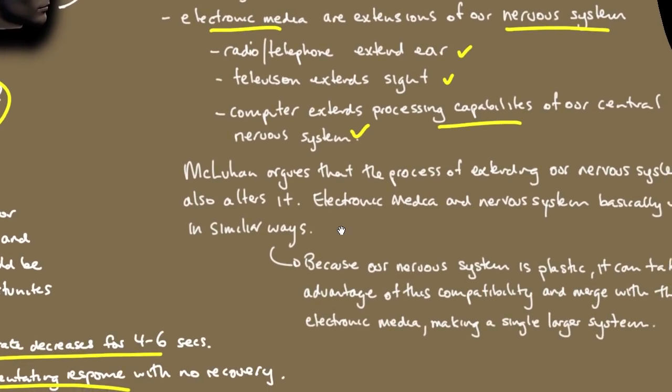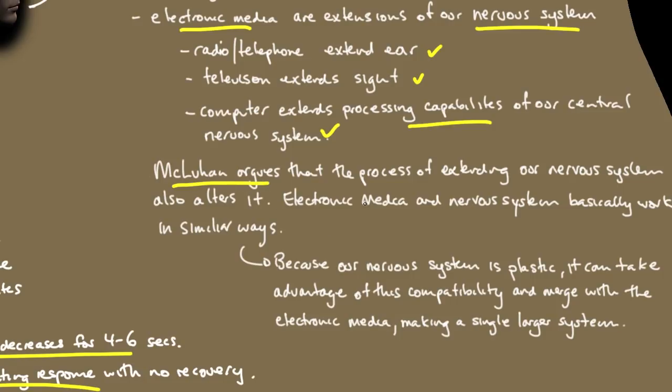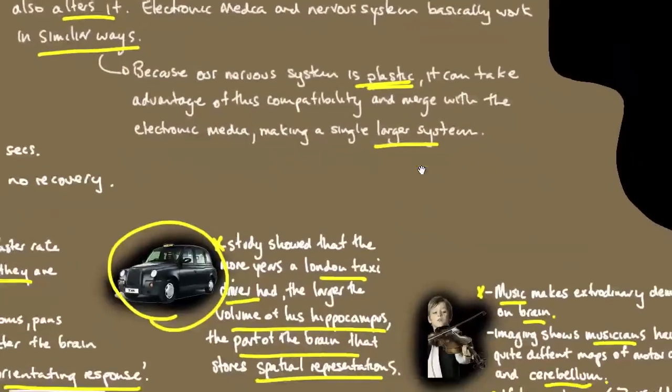McLuhan argues that the process of extending our nervous system also alters it. Electronic media and nervous system work in very similar ways. Here's a key point. Because our nervous system is plastic, it can take advantage of this compatibility and merge with electronic media, making a single larger system. The trend is that we're becoming more and more entwined with electronic media, to the point where people who lose their phone or camera say they feel like they've lost a piece of them. How we demarcate between ourselves and electronic media seems to be becoming fuzzier by the day.